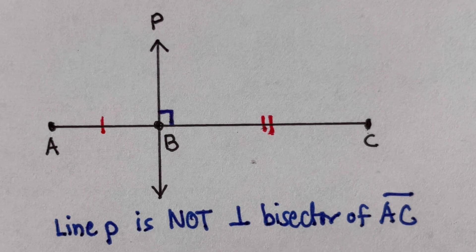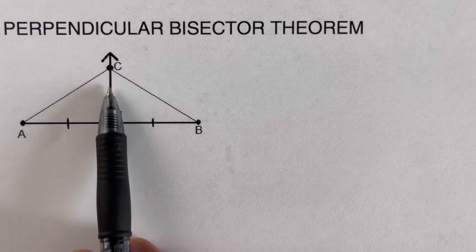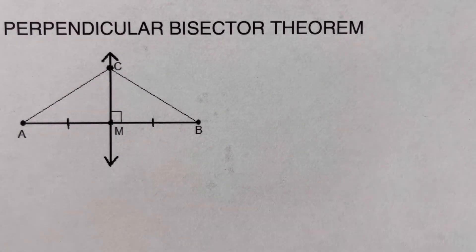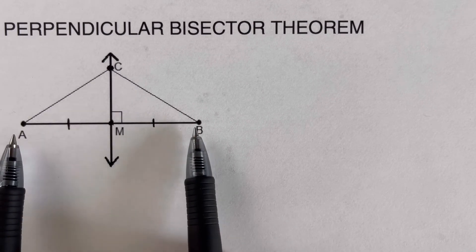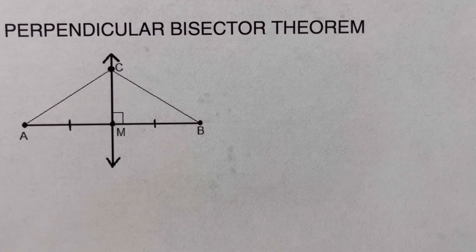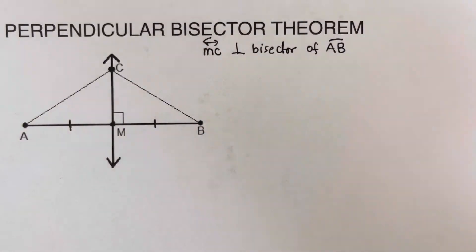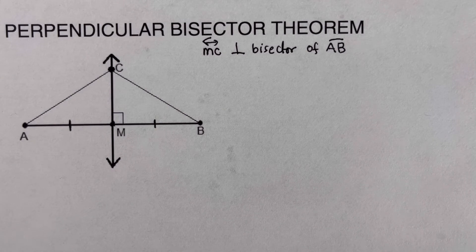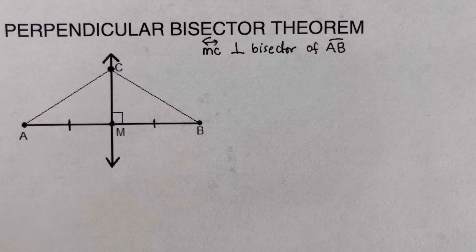Now let's cover the Perpendicular Bisector Theorem. Looking at this picture, line CM is a Perpendicular Bisector of segment AB — two conditions are met: it forms a 90-degree angle and AB is cut into two equal pieces. The Perpendicular Bisector Theorem states that any point on the Perpendicular Bisector is equidistant from both endpoints of the line segment on which it is drawn.